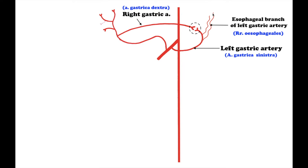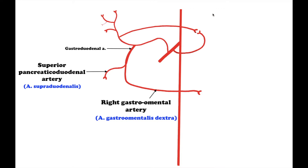The gastroduodenal artery is a terminal branch of the common hepatic artery, which passes behind the duodenum and divides into two branches: the superior pancreaticoduodenal artery, arteria pancreaticoduodenalis superior, and the right gastro-omental artery, arteria gastro-omentalis, also known in older texts as arteria gastroepiploica dextra.